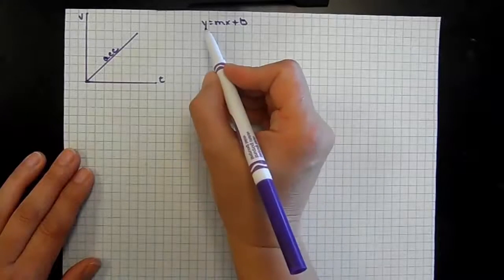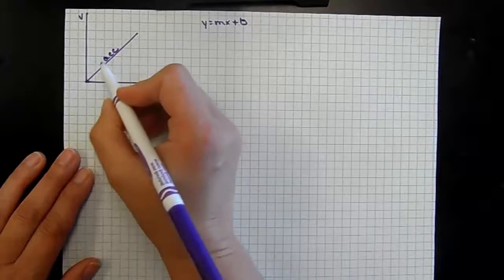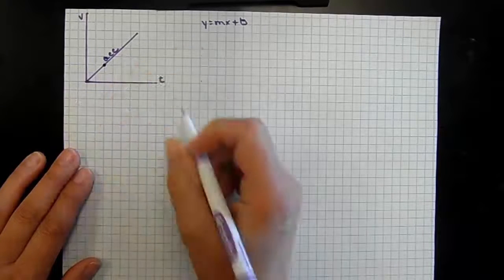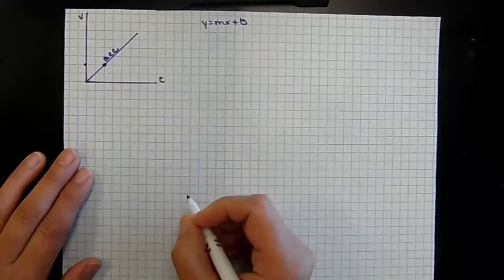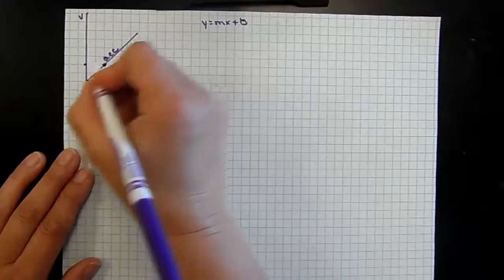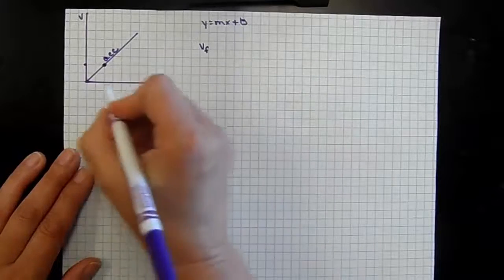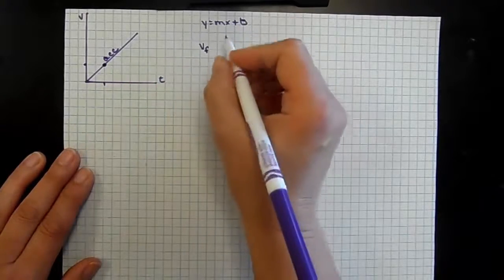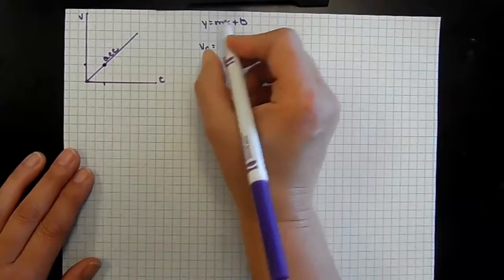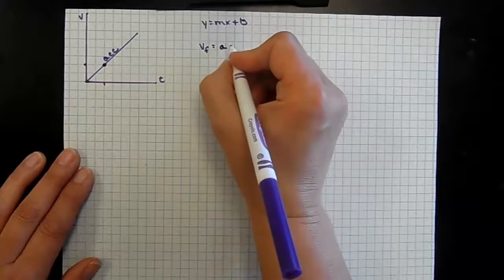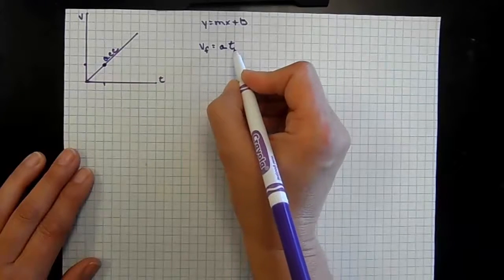From this graph, when we talk about y, we're looking at the value on the y-axis. If we come up to time one right here and read this velocity, what we're actually looking at is the final velocity. So our y is equal to our final velocity at a given time, because time is our x variable. So our final velocity equals the slope of that line — which is our acceleration — times whatever time it is. Our final velocity equals acceleration times time.